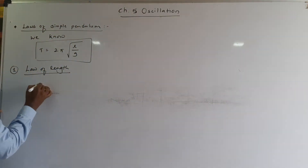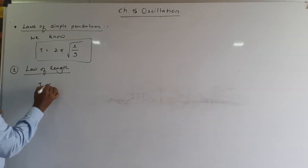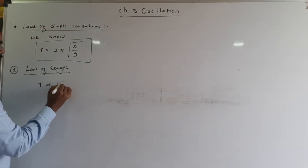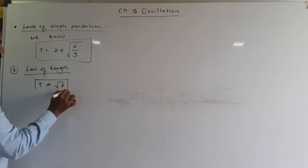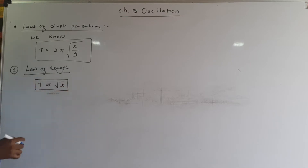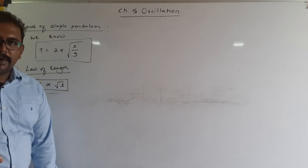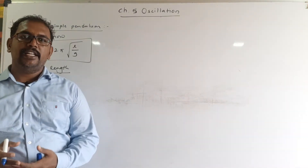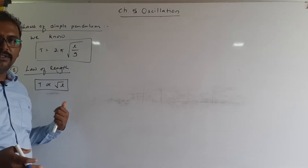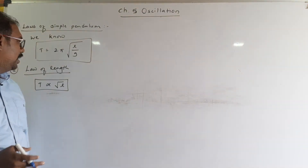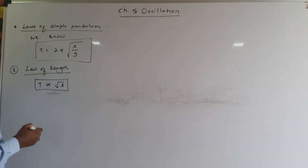So this is the law of length: the period of a simple pendulum is directly proportional to the square root of the length of the simple pendulum.